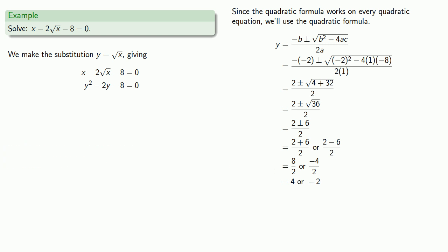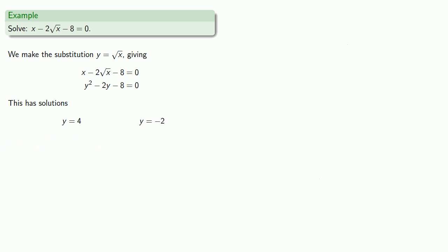And again, if it's not written down, it didn't happen. We should write down that we have solutions y equals 4, y equals negative 2. Well, again, the original equation was in terms of x, so y equals 4 is not a solution. But equals means replaceable. So our two equations here become square root of x equals 4 and square root of x equals negative 2.